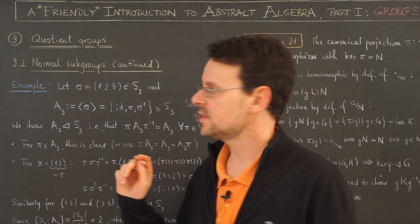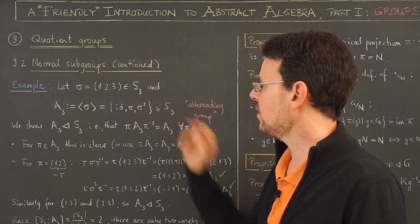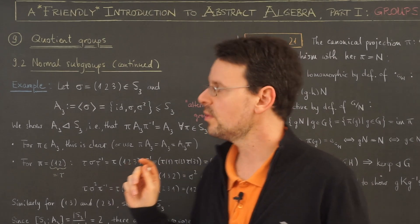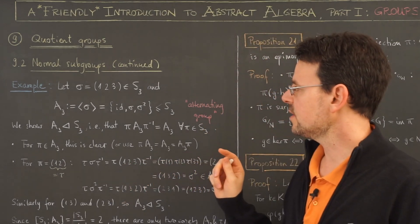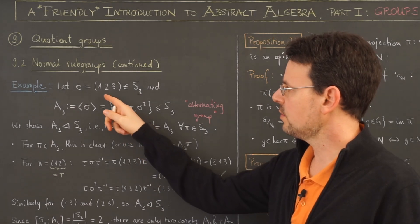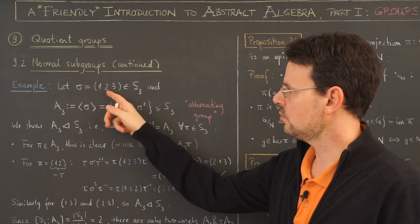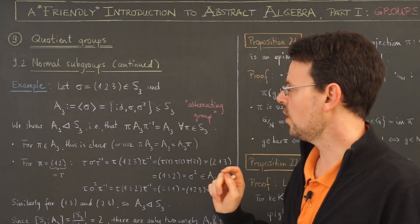We start by considering the most basic non-commutative example, namely the symmetric group on three elements, and we take sigma to be the three cycle 1 to 3. So sigma moves 1 to 2, 2 to 3, and 3 to 1.